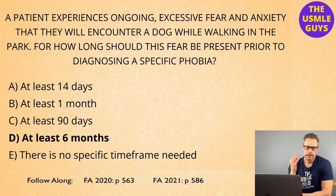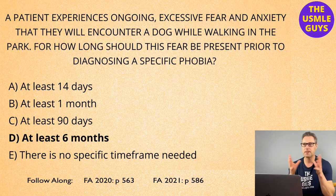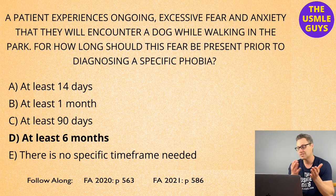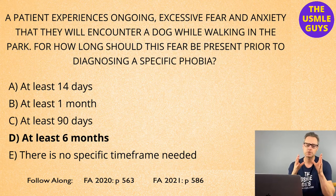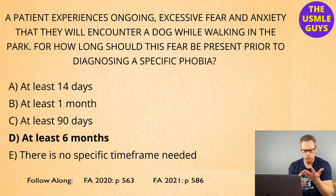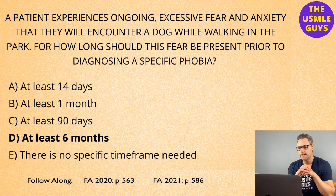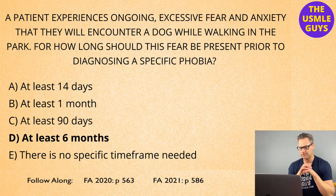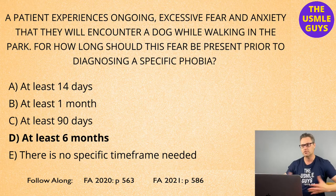On the opposite end, we have generalized anxiety disorder. This is basically an excessive state of worry or anxiety for most days for six months or more. But as opposed to specific phobia, the anxiety and worry associated with GAD is about a variety of different things — like family, school, work, the state of the country. That's the way you're going to recognize GAD: it's general, just a worry about everything.